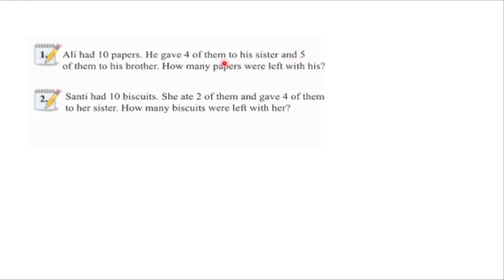But what is the function hidden in this question? You can see that first of all, Ali had 10 papers, but he gave 4 papers and also 5 papers. So whenever you give something to anyone, the number of papers will decrease from you. So first of all, you should notice how many papers you are giving. So how can you solve this question? Let's go to the board and try to solve question number 1.